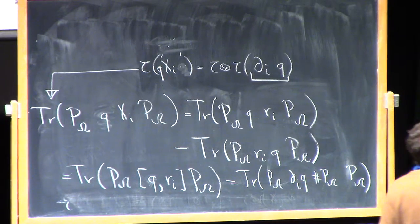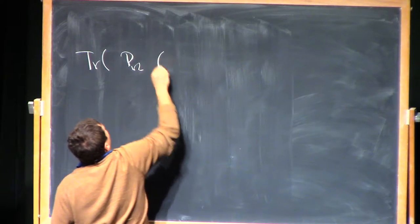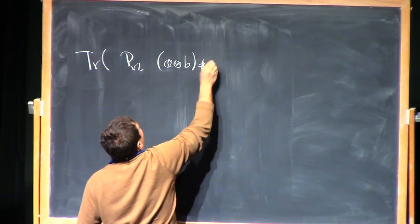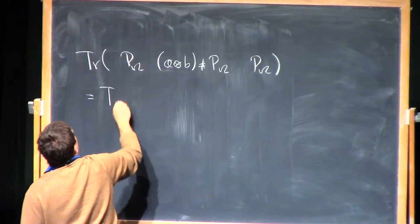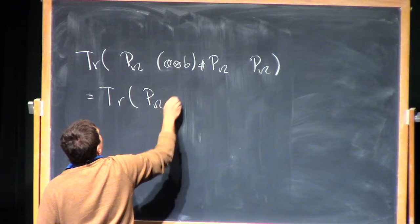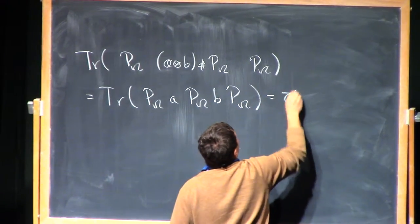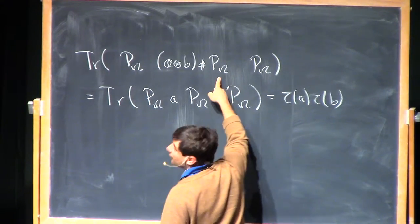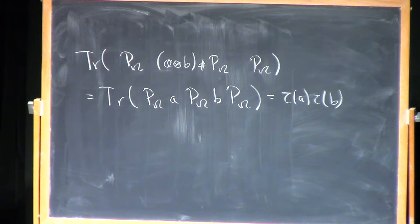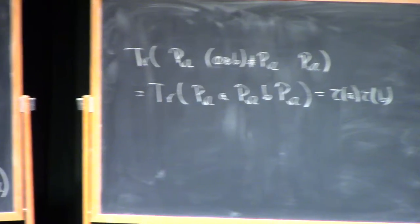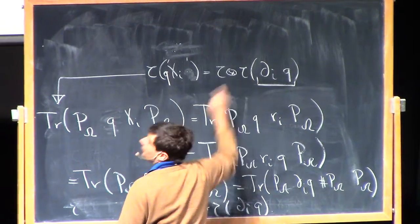By the formula we derived, that commutator equals the trace of p_omega d_i(q) hash p_omega, times p_omega. Now all we need is to convince ourselves that the trace of p_omega (a tensor b) hash p_omega times p_omega equals trace(a) times trace(b), using the definitions with p_omega a p_omega b p_omega. That's trace of a times trace of b — since p_omega is rank one. So that's exactly tau tensor tau of d_i(q), which is what we wanted to prove.